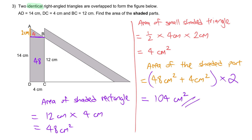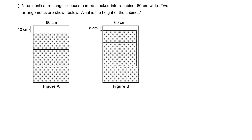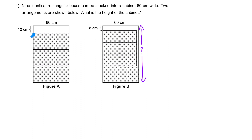Question four: nine identical rectangular boxes are stacked into a cabinet 60 cm wide. Two arrangements are shown below. What is the height of the cabinet? There is one cabinet, but two different arrangements of the boxes are shown. For the first arrangement, given that the boxes are packed nicely, we can deduce the breadth of one rectangular box.